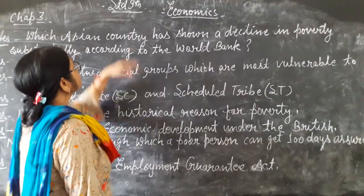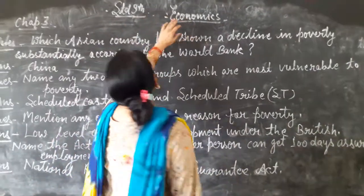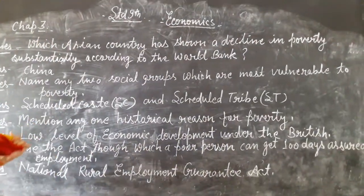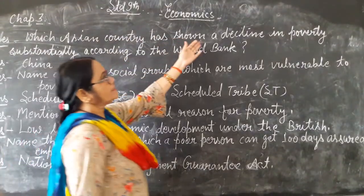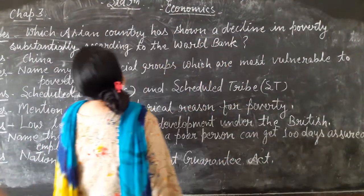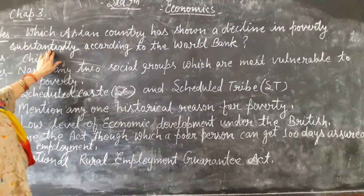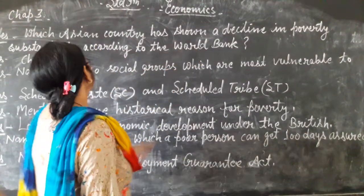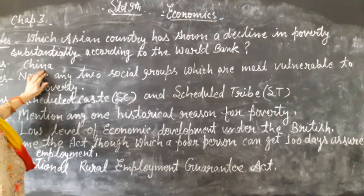Good morning students. Chapter 9, economics, chapter 3. Which Asian country has gone or declined in poverty? Answer: China.